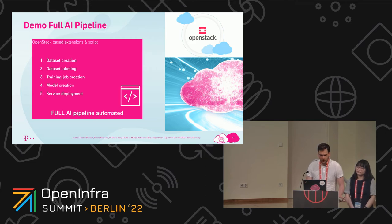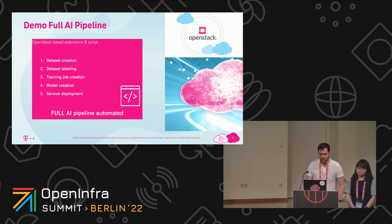Here you can see the main steps I will iterate through in the following minutes. First, I will create a dataset. Then I will label it. After that comes the creation of the training job from that labeled dataset. Then I will build a model from that training job. And after that, the last step is to deploy that built model as a real-time service.